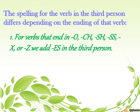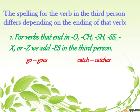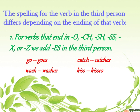For verbs that end in o, ch, sh, ss, x, or z, we add es in the third person. For example: go becomes goes, catch becomes catches, wash becomes washes, kiss becomes kisses, fix becomes fixes, buzz becomes buzzes.